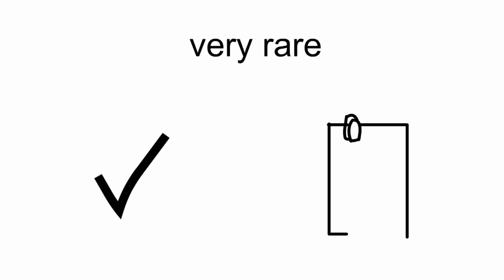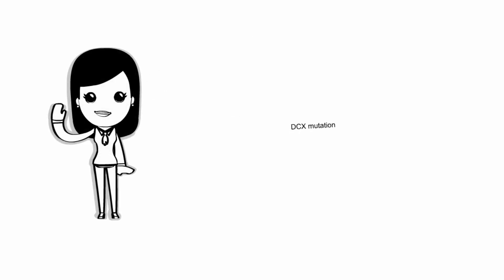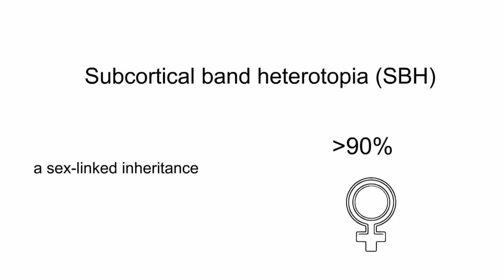It is very rare but does happen and has been reported. It is mostly seen in girls and is a result of DCX mutation. It is also called subcortical band heterotopia and has a sex-linked inheritance, and hence more than 90% of the affected individuals are females.